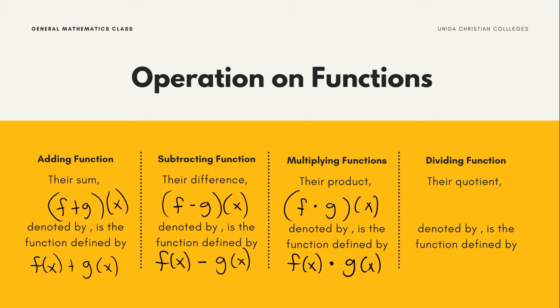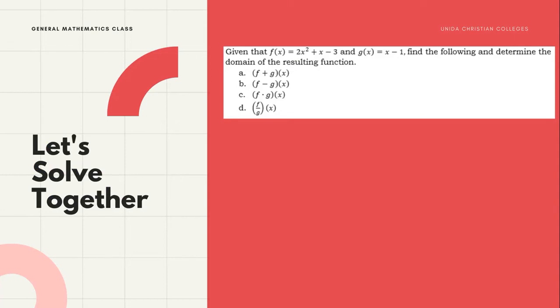And last, in dividing functions, their quotient, denoted by (f/g)(x), is the function defined by f(x) over g(x). So, let's have an example.